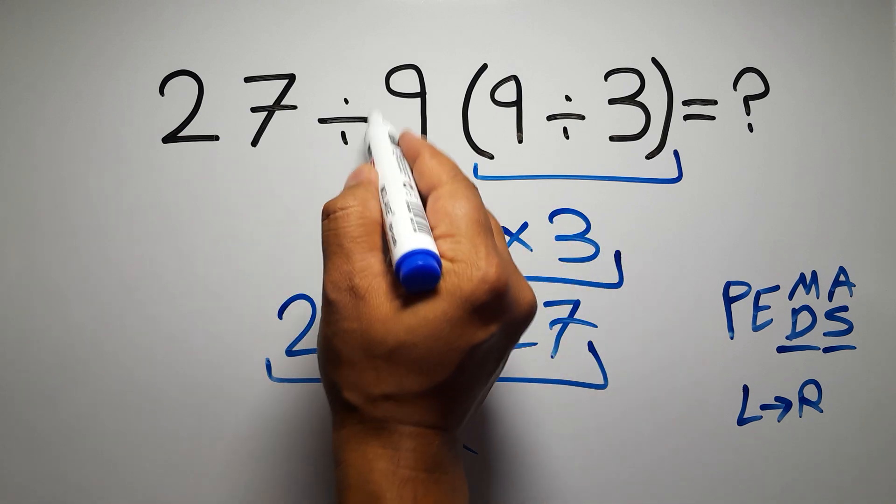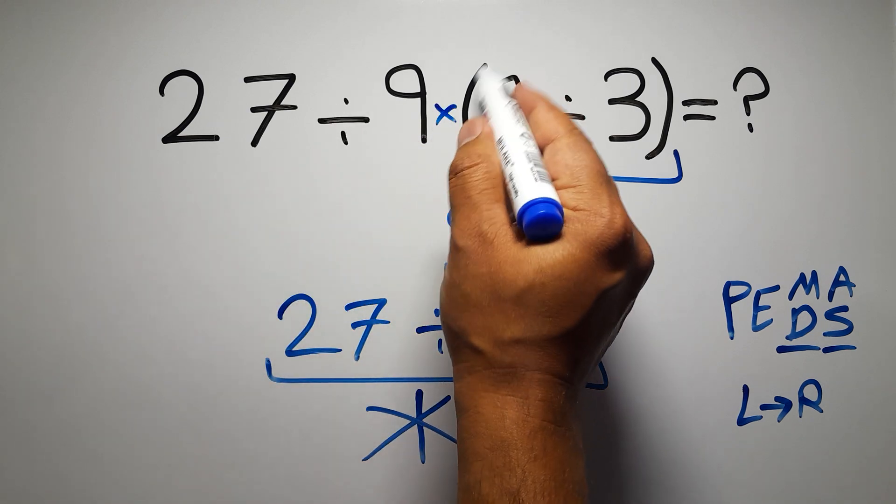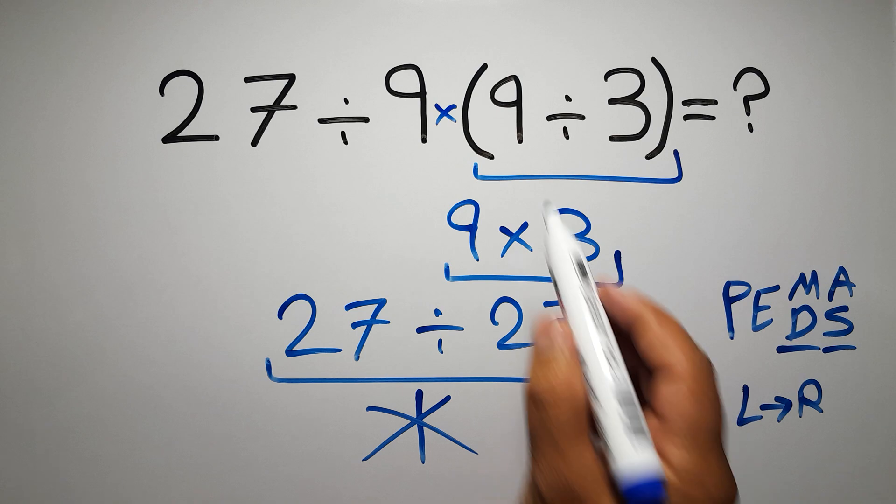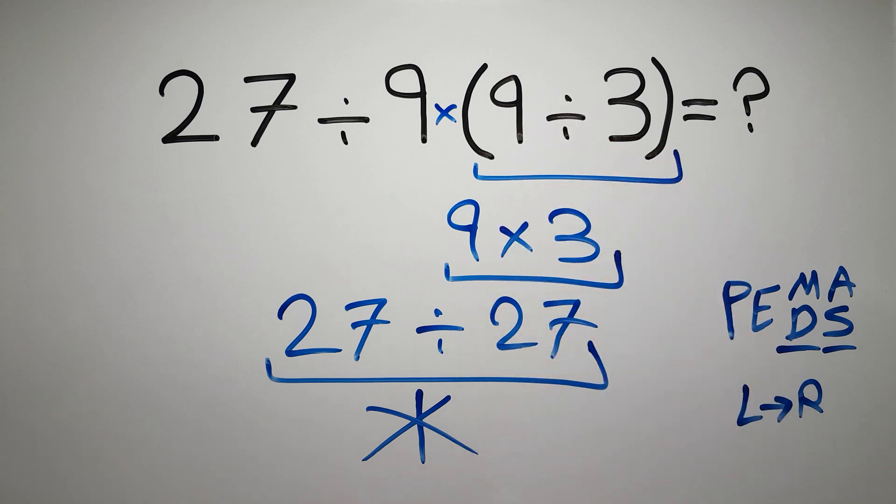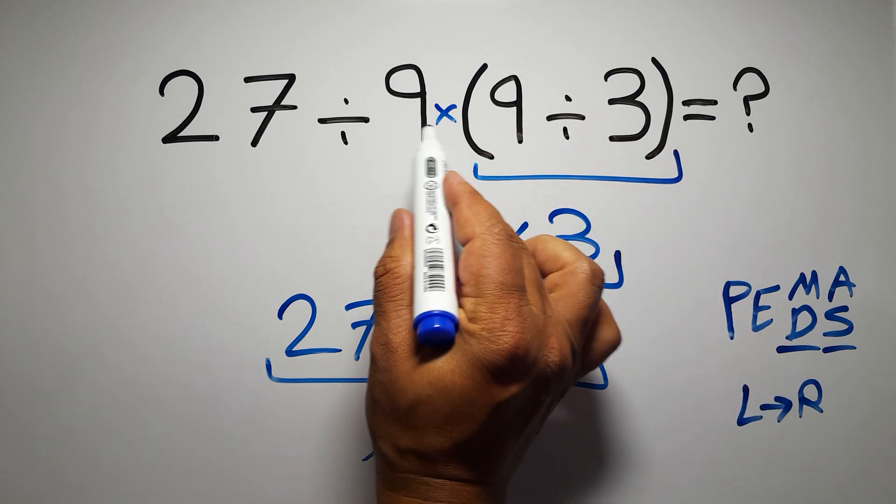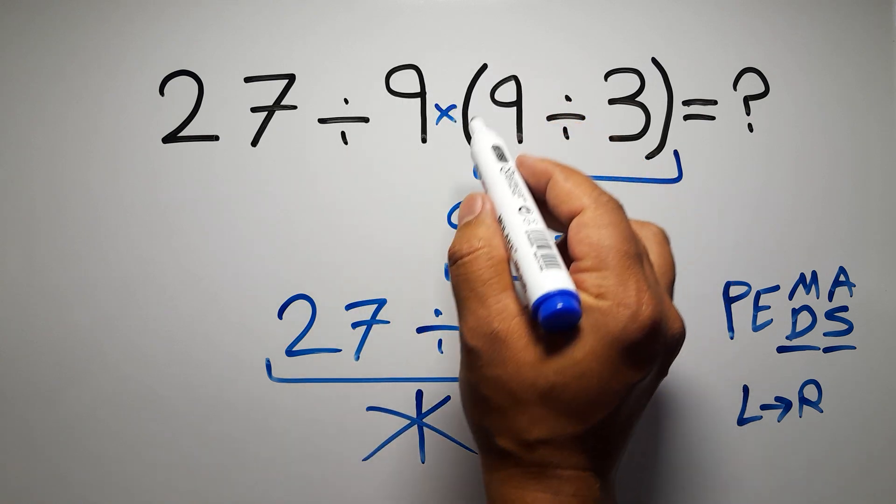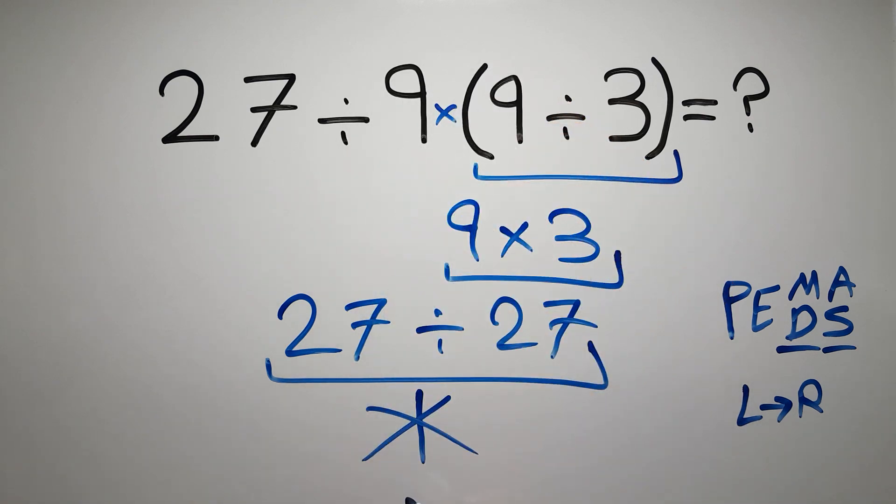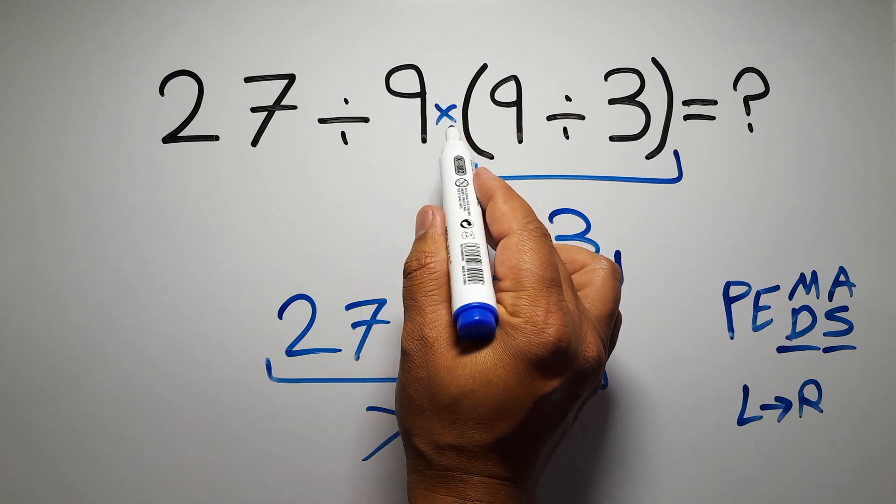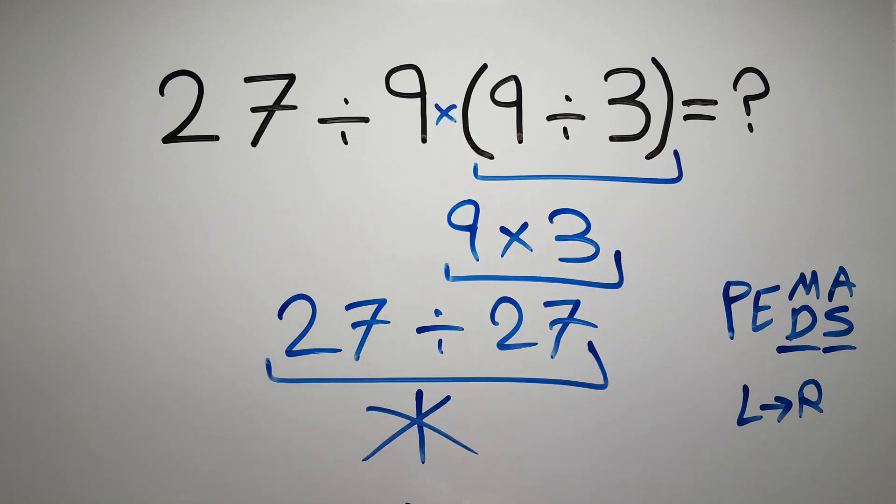In this expression, we have one division, one multiplication, and one parentheses. Inside these parentheses, we have one division. Here we have a multiplication, because in mathematics, when a number is placed next to parentheses, it means multiplication, and we usually don't write the multiplication sign for brevity.